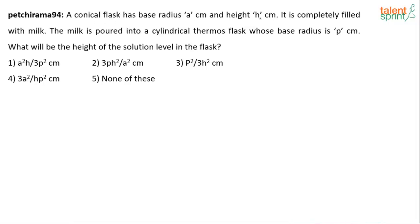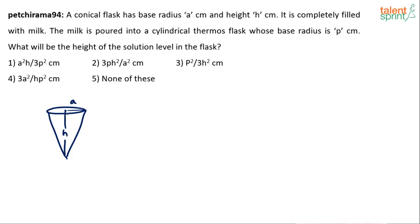A conical flask has base radius a centimeter and height h centimeter. It is completely filled with milk. The milk is poured into a cylindrical thermos flask whose base radius is p centimeter. The very simple thing to be done here is just equate the volumes. There is a conical flask where the base radius is a centimeter and the height is h centimeter. This flask is completely filled with milk.